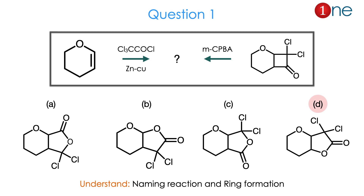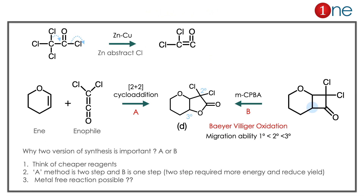Let us see how. The starting material has the chloride and you are using the zinc-copper couple. Zinc abstracts the chlorine, giving a ketene-like structure with a cumulative double bond. This reacts with our starting material. It acts as an enophile because it has electron-withdrawing chlorine. The starting material is an alkene, so you expect a 2+2 cycloaddition. The product is clearly D. The same product is obtained from the Baeyer-Villiger oxidation via the other pathway, defined by the migrating ability — tertiary migrates faster than secondary.